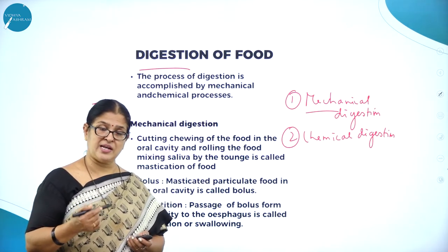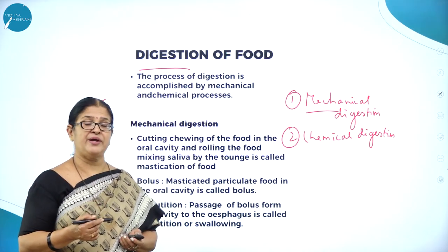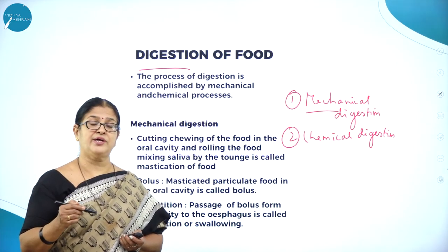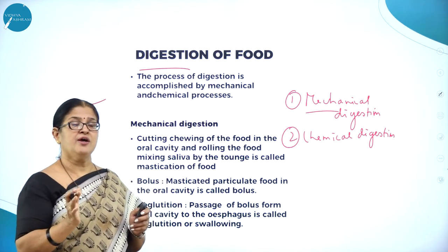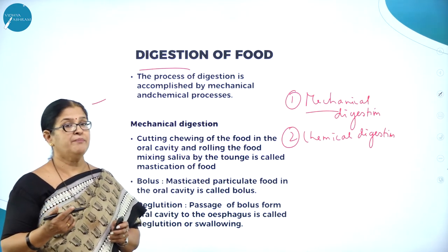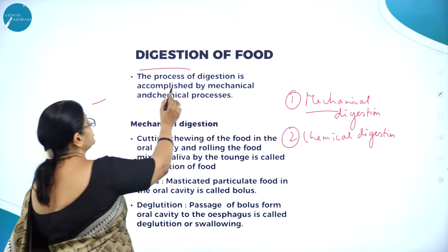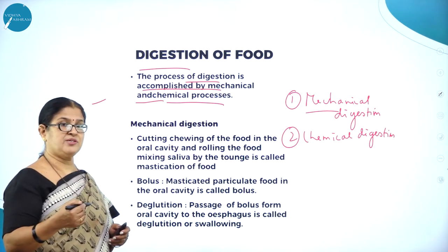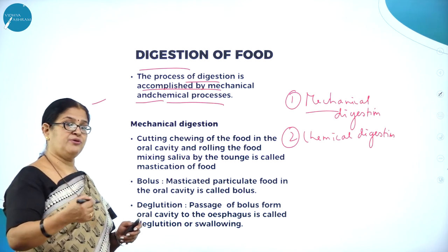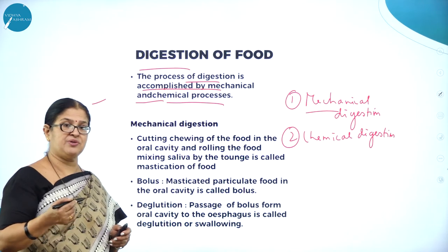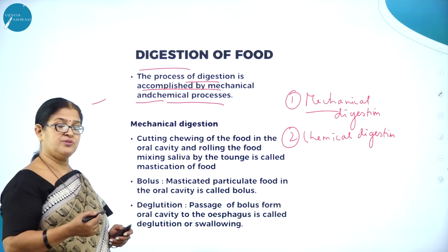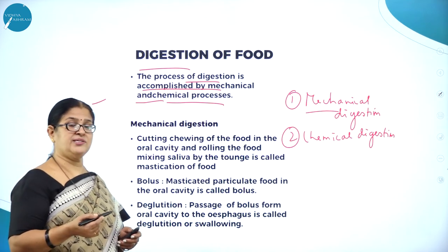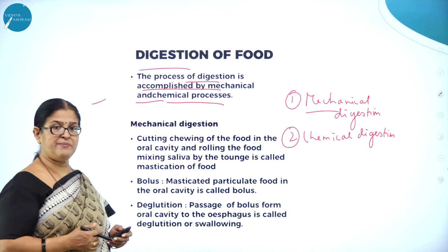Saliva produced by the salivary glands and the tongue mixes the food with saliva, making it into a soft semi-solid food called bolus. Maximum — about three-fourths — of the carbohydrate is digested in the mouth itself. That process in the buccal cavity is called the mechanical process of digestion. From the time food passes into the stomach through the small intestine with the associated digestive glands, everything is digested, and the undigested food goes into the large intestine as fecal matter — that entire process is chemical digestion.